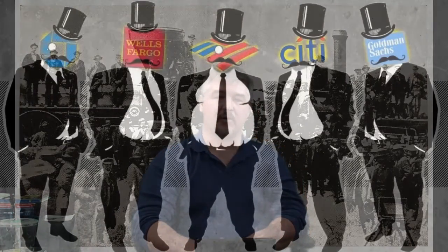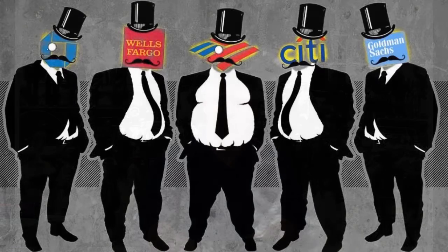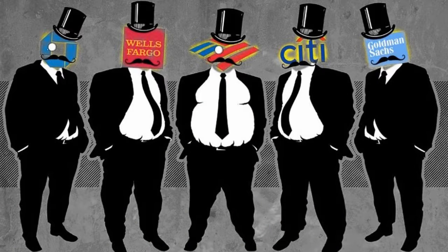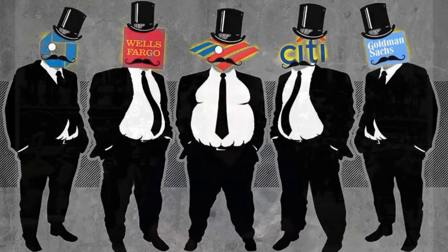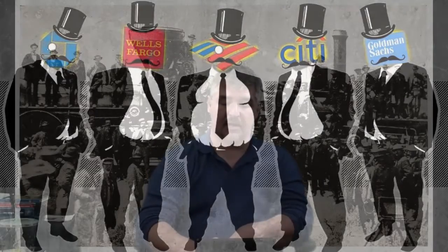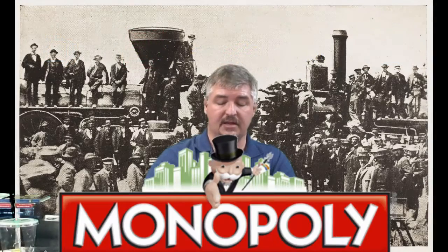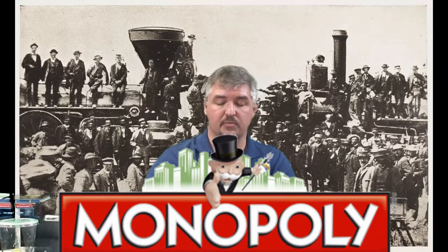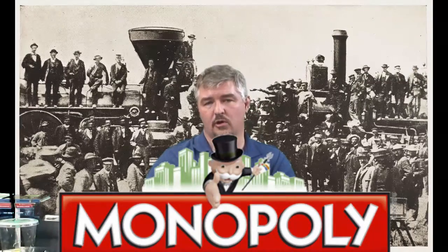A new form of business became popular: the corporation. Corporations are treated as being separate from their owners, and they allow for many people to be partial owners of a company by purchasing shares. Many companies began to merge together to form trusts, effectively giving them monopolies — businesses with complete control over a market.